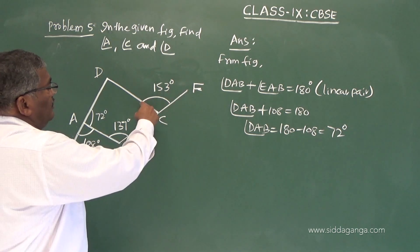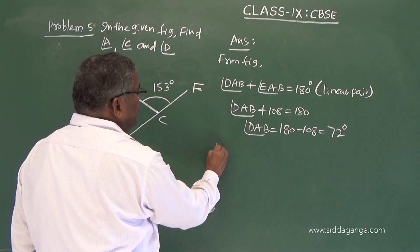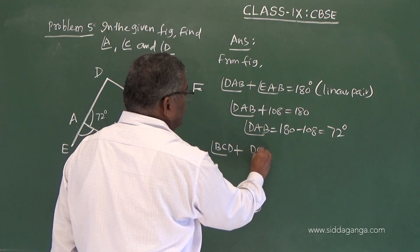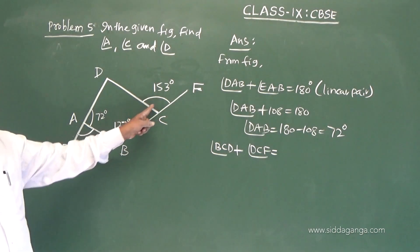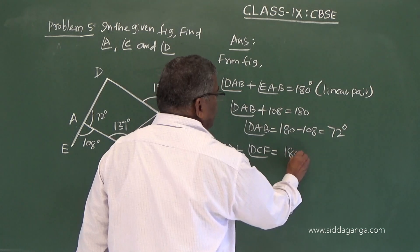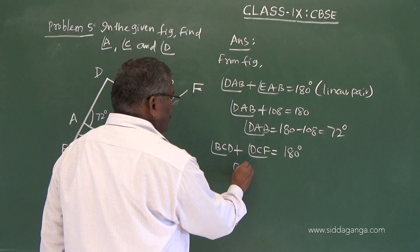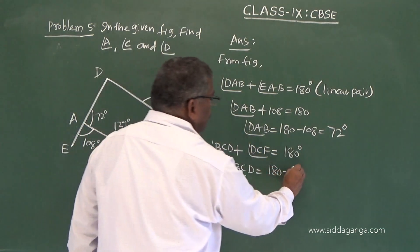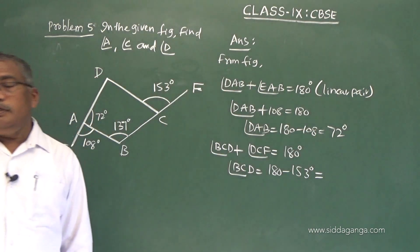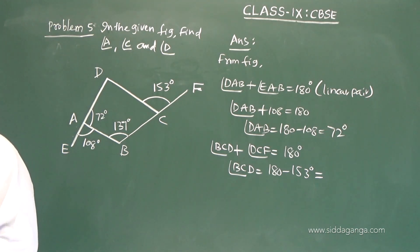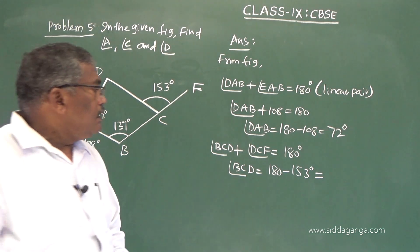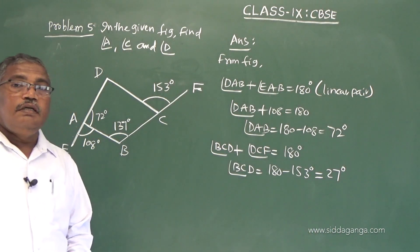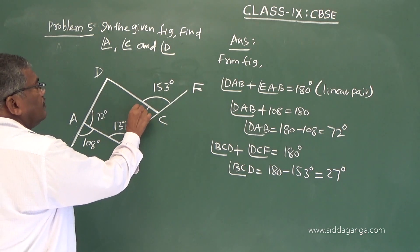Similarly, angles BCD and DCF form a linear pair. So BCD plus DCF equals 180 degrees. DCF is given as 153 degrees, therefore angle BCD equals 180 minus 153, which equals 27 degrees. So angle C is 27 degrees.